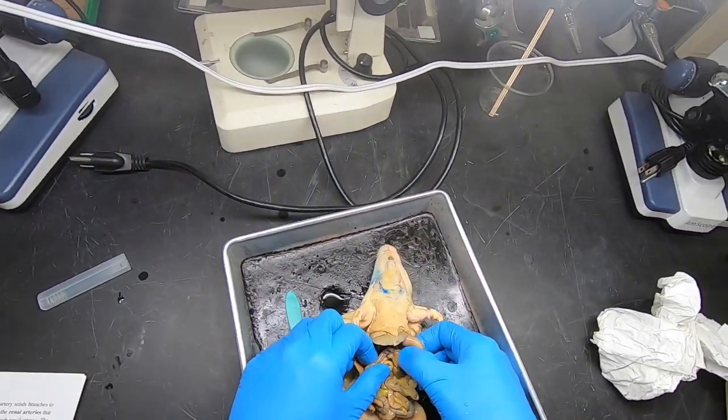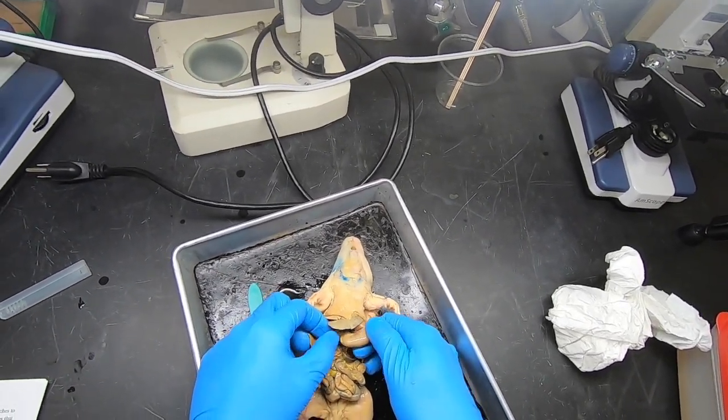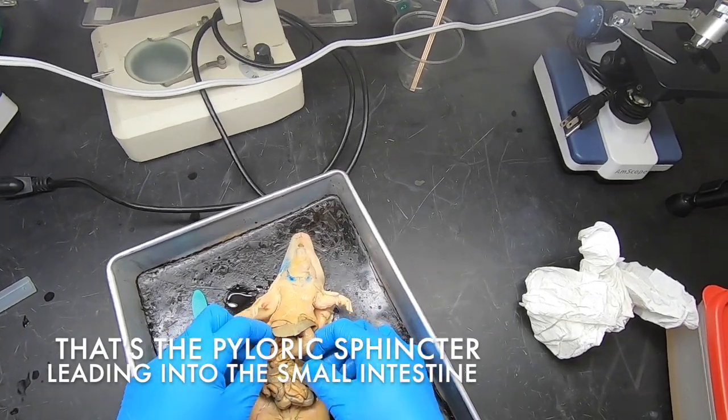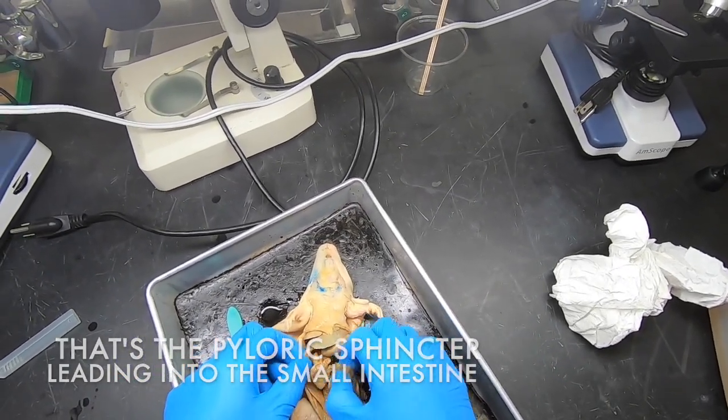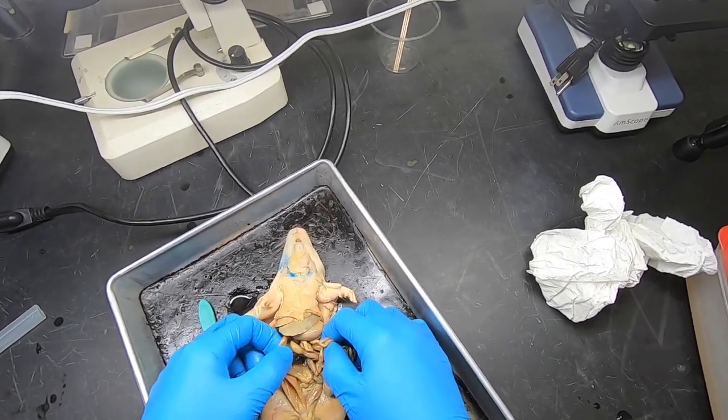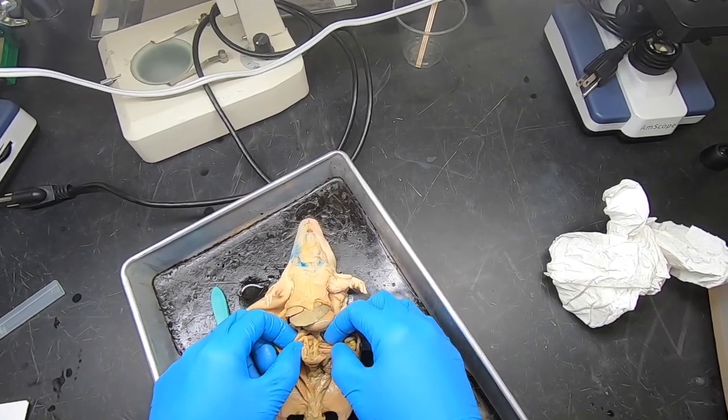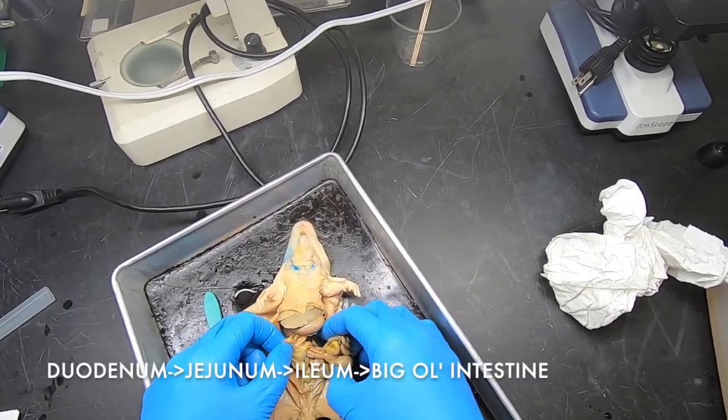And here we have another sphincter which feeds into the small intestine. The small intestine feeds down, goes all around and around. We've got the duodenum, then the jejunum.